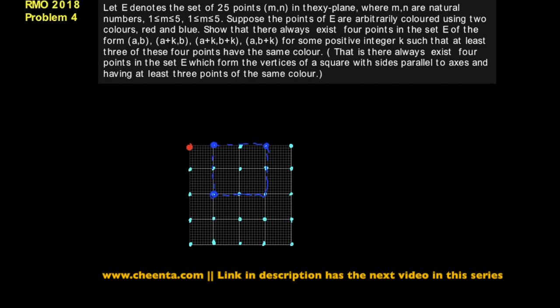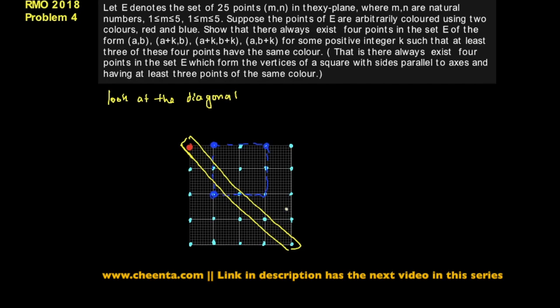This is a very interesting problem and we can solve it using a simple strategy. Whenever you have a grid problem, one of the things you should always do is look at the diagonal. It's a problem-solving strategy — whenever you are working with too many things that can change, you want to look at something central to the picture. There are five points in the diagonal and we want to know what can happen.